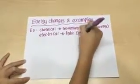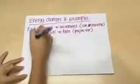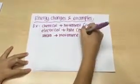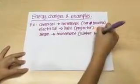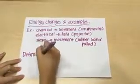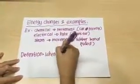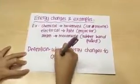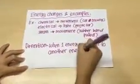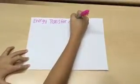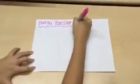Electrical energy into light energy — for example, a projector. Strain energy into movement energy — for example, a rubber band pulled. Definition of energy change: when one energy changes to another energy.